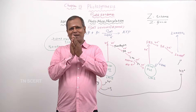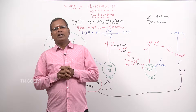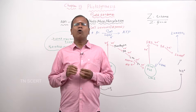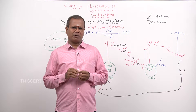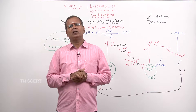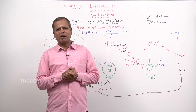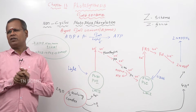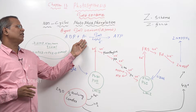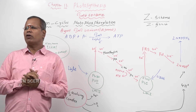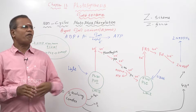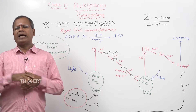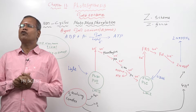Dear students, Anivarikum Vannakam. Now we are going to learn about non-cyclic photophosphorylation. We know what is phosphorylation. Phosphorylation is the addition of a phosphate group. ADP with a phosphate chain becomes ATP — this is phosphorylation. For this process it needs energy. The energy obtained from sunlight is called photophosphorylation.